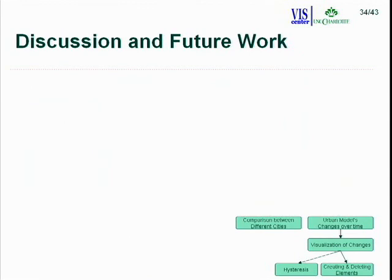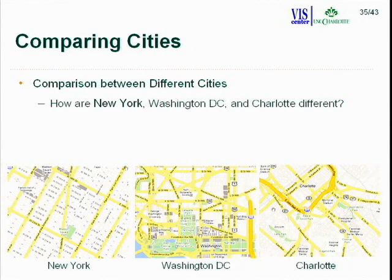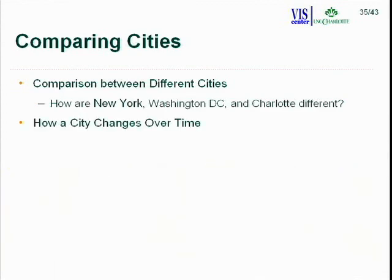If we can quantify a city, we can compare cities objectively. Currently, architects describe cities subjectively — New York City is a grid, Washington DC is ray-like with roads emanating from Congress and the White House, and Charlotte has poor urban planning with roads everywhere. But these descriptions are not quantifiable or repeatable. Our goal is to compare cities in a more objective, measurable manner.